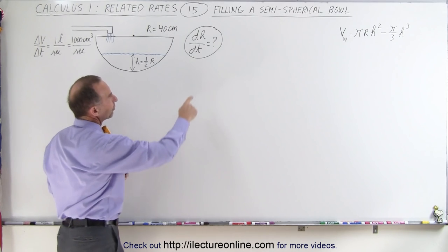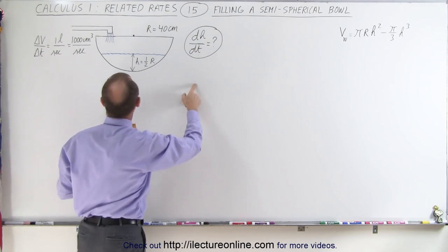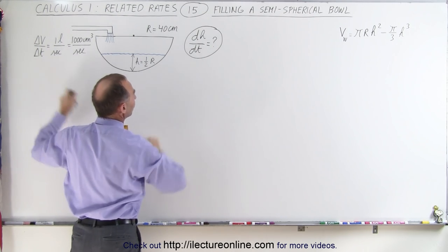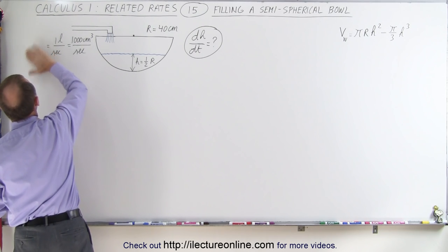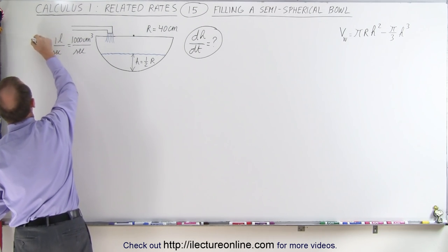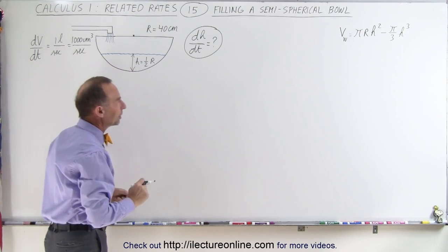So what we're trying to do is find dh dt, which means we need to find the relationship between the rate of change of the volume with respect to time. And maybe what I should do here instead of using deltas, I'll simply write it as differentials. So dv dt is equal to that, and so that makes it a little bit easier.